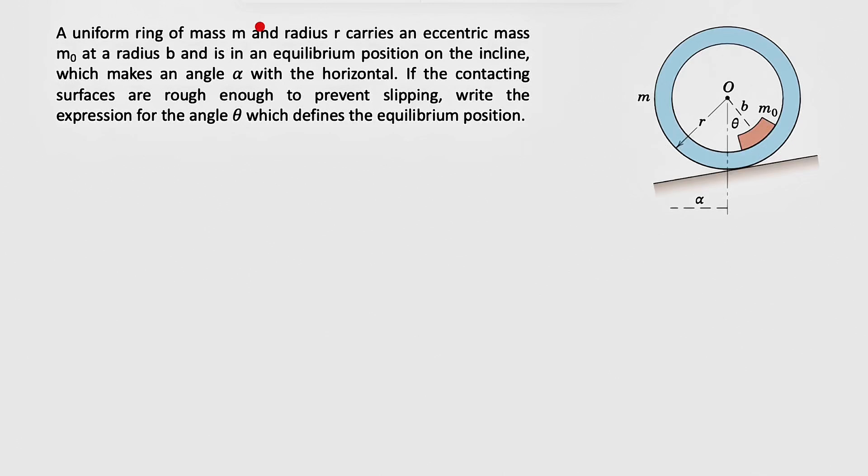Alright guys, we're going to be solving another question from the third chapter of Engineering Mechanics Statics by Meriam, and we have a uniform ring that has a mass m and radius r that carries an eccentric mass m₀ at radius b, and is in an equilibrium position on the incline, and it makes an angle α with the horizontal.